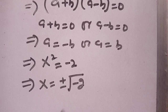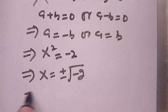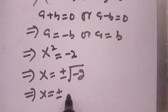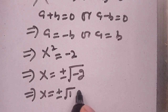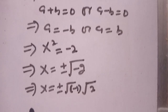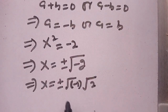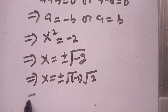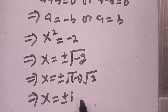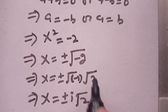From Case 1, x squared equals minus 2. It becomes x is equal to plus or minus square root of minus 2, which implies x is equal to plus or minus square root of minus 1, times square root of 2. Now, we know that the square root of minus 1 is iota. Thus, our value of x is equal to plus or minus iota root 2. This is our first case.